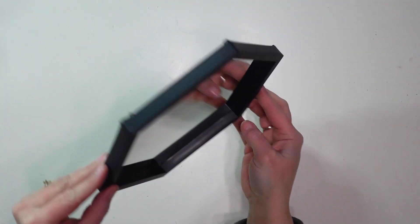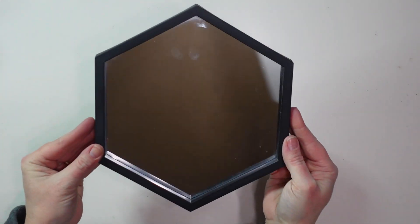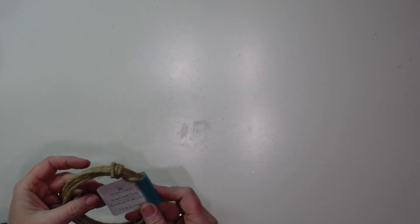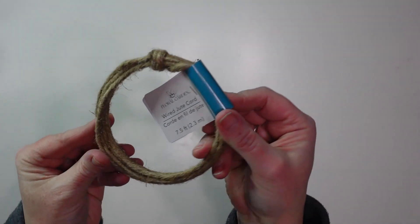To create a tray for my centerpiece I am going to be using this hexagon shaped mirror from Dollar Tree, a piece of shiplap looking scrapbook paper that I got at Hobby Lobby, and some wired jute twine from Dollar Tree.